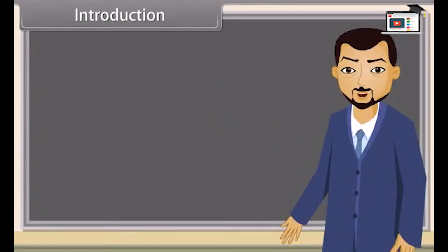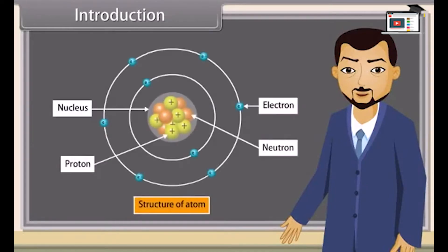Today I'll teach you the topic: structure of the atom. Atoms are the fundamental units of matter. Everything around us is made up of atoms. A typical atom consists of a nucleus of protons and neutrons, with electrons orbiting this nucleus.